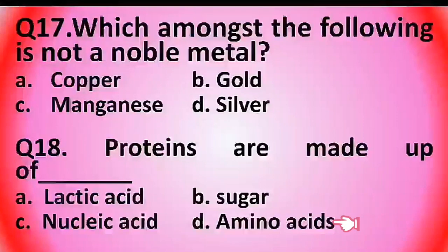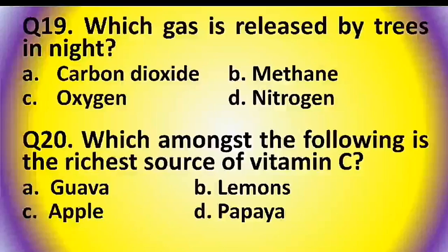Question 18: Proteins are made up of what? Options are: lactic acid, sugar, nucleic acid, or amino acids. The answer is option D: amino acids.